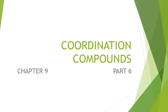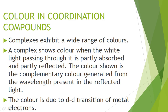Starting with the next part of the chapter: Coordination Compounds — Color in Coordination Compounds. Normally these coordination complexes are colored and show a wide range of colors. They show color when white light passing through them is partly absorbed and partly reflected. The color shown is the complementary color generated from the wavelengths present in the reflected light. This color is due to d-d transition of metal electrons.